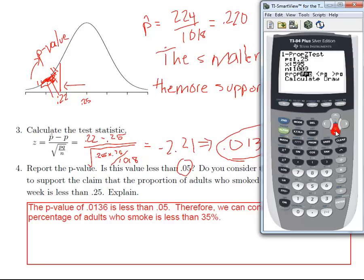And then your x is just your count. And so we had 224 for our count of smokers. And n is your sample size. And that was 1,018. And then the last thing is the sign of your alternative hypothesis. So our sign was less than. So we want to enter less than. So I highlight less than, I hit enter. And then I go down to calculate and hit enter.